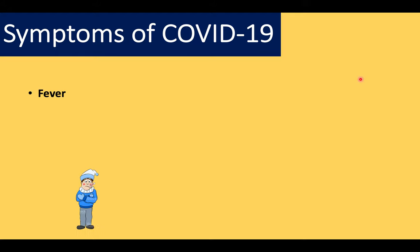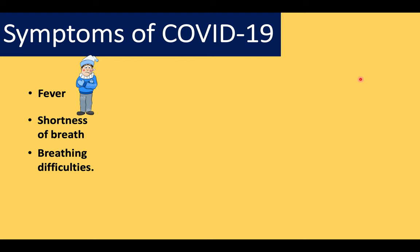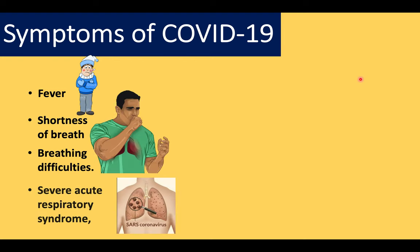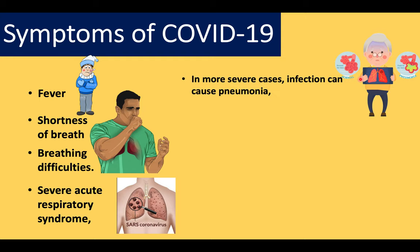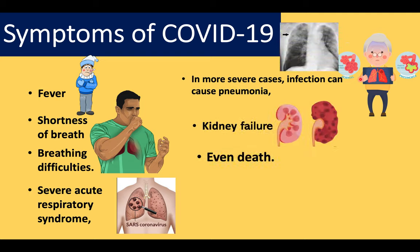Symptoms of COVID-19 usually include fever, shortness of breath, and difficulty breathing, as well as severe acute respiratory syndrome. In more severe cases, as the disease prolongs and worsens, the patient can develop pneumonia, which can lead to kidney failure and even death. Some patients are also completely asymptomatic — those are the ones you need to look out for.